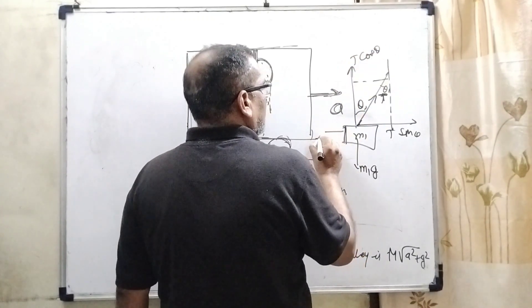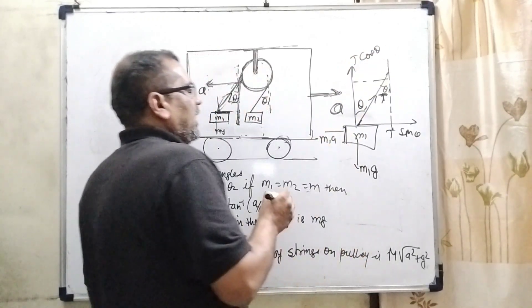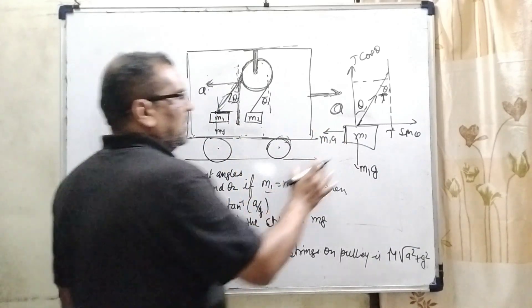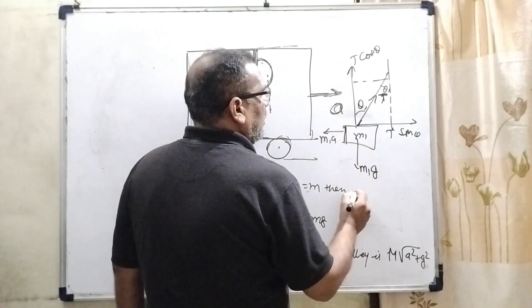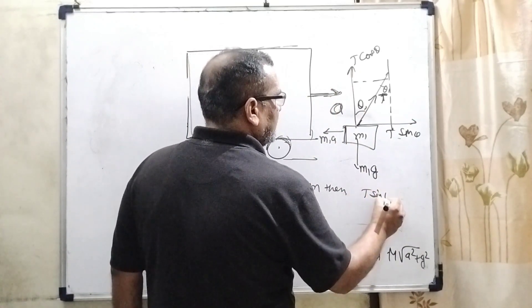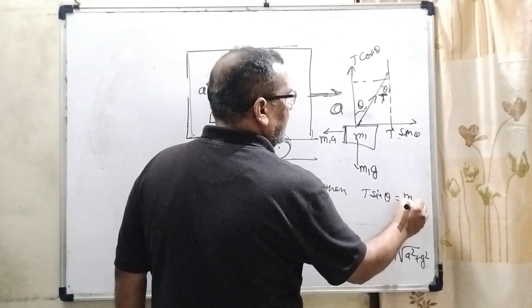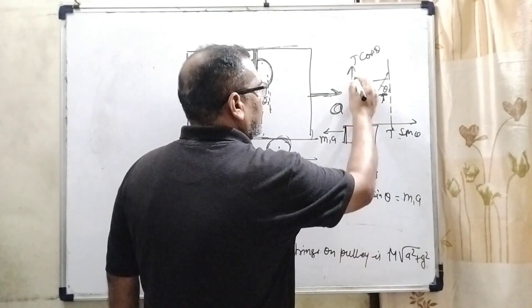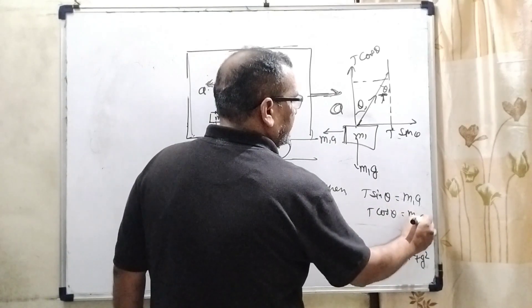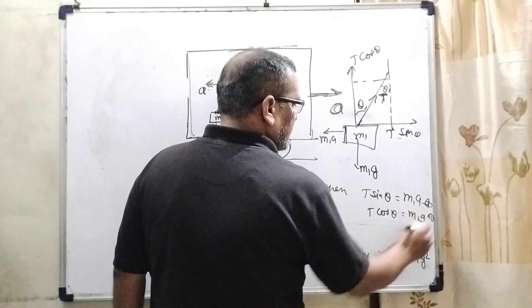Here m1 times a, the pseudo acceleration, is acting to the left side for the first block. So the equilibrium condition is T sin theta equal to m1 a, and second, T cos theta equal to m1 g. This is the first equation, and this is the second equation.